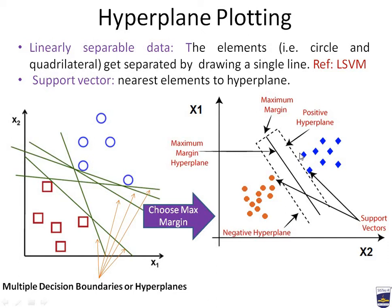Another concept is the support vector. Support vectors are the nearest elements to the hyperplane. The hyperplane has distance margins, and the elements nearest to these margin lines are the support vectors. The plus-d margin has one nearest element and the minus-d margin has another — these two are the support vectors, because the margin lines pass nearby to these elements.